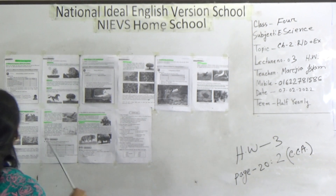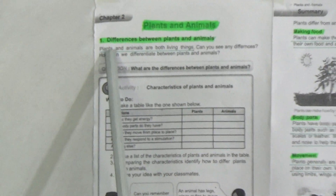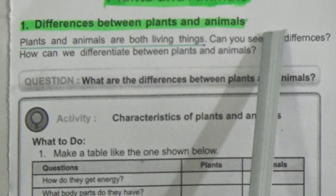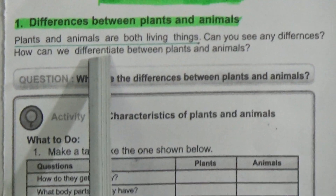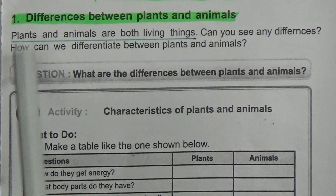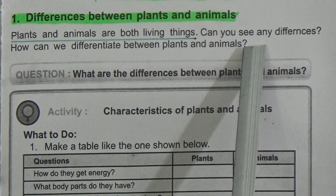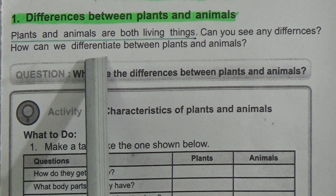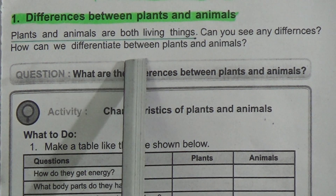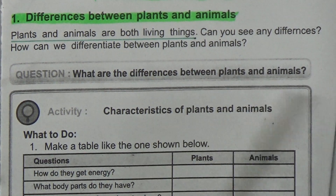Our chapter 2 is titled 'Plants and Animals.' Plants and animals are both living things — underline this line. Can you see any differences? How can we differentiate between plants and animals? Now go to the next page.